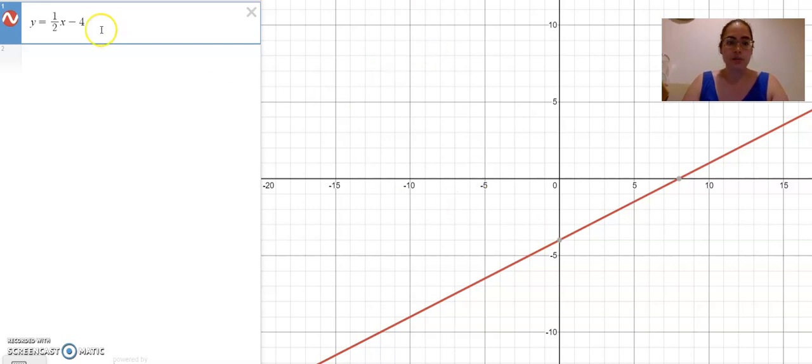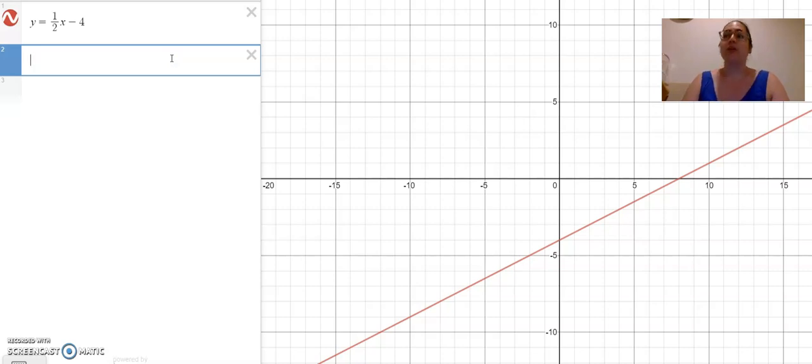So what you see on the top left corner of your screen is an equation y equals one-half x minus 4, and this red line is the graph of that equation. What I'm going to show you, and we'll only be able to really do this in Desmos, we can't do it on a graphing calculator...